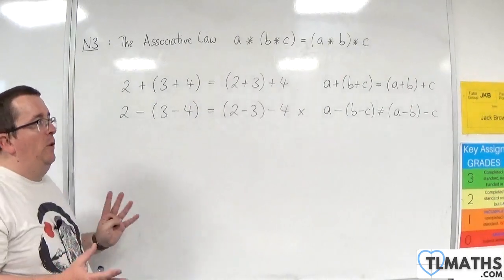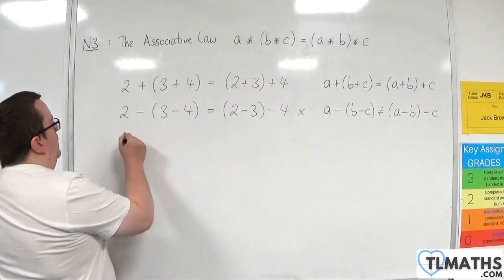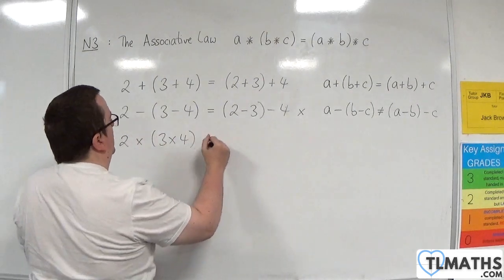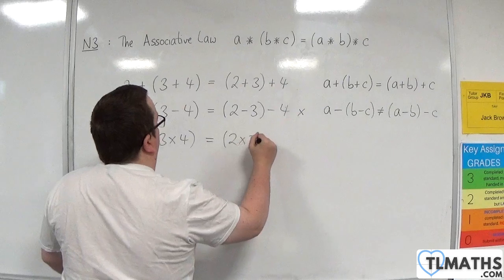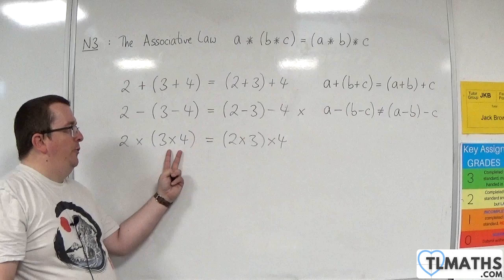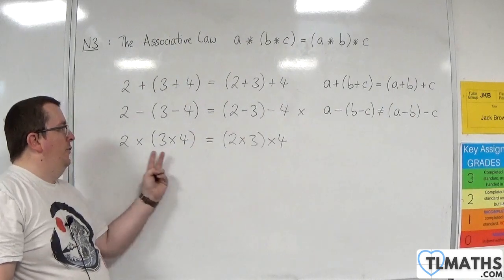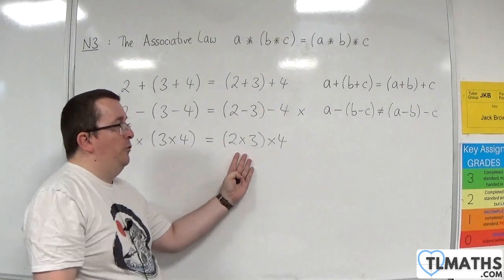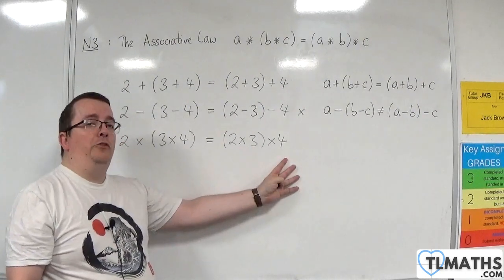Right, how about multiplication? What about 2 times 3 times 4 is equal to 2 times 3 times 4? Well, 3 times 4 is 12. 2 lots of 12 is 24. 2 times 3 is 6. 6 4s are 24.